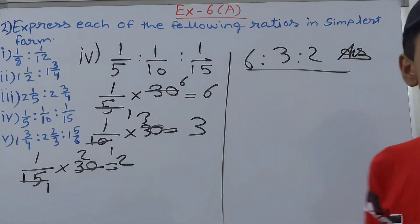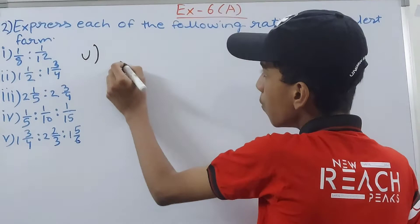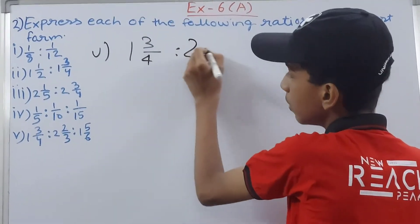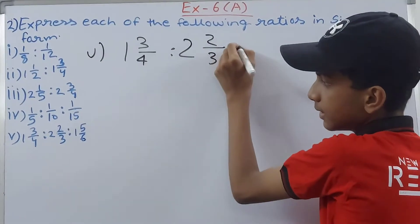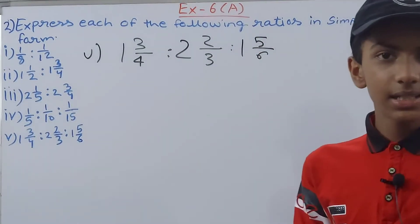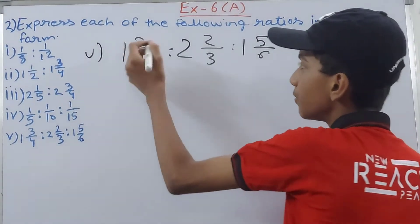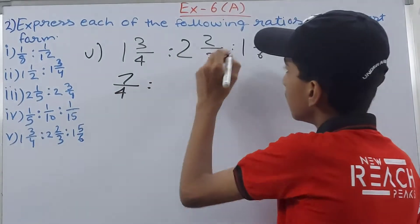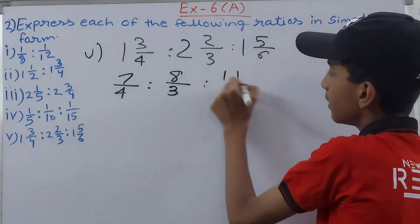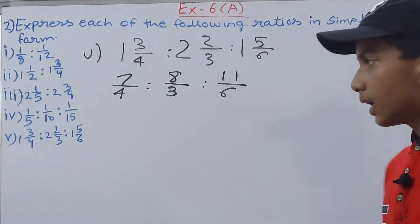The last part is 1 whole 3/4 : 2 whole 2/3 : 1 whole 5/6. Converting to improper fractions: 1 whole 3/4 = 7/4, 2 whole 2/3 = 8/3, and 1 whole 5/6 = 11/6. The denominators are 4, 3, and 6.